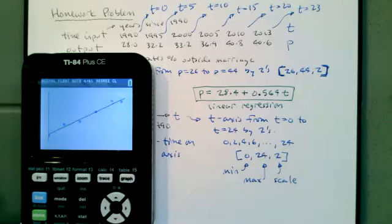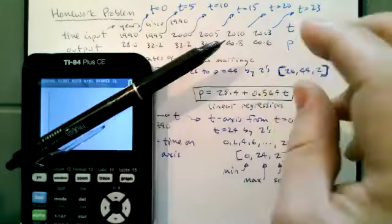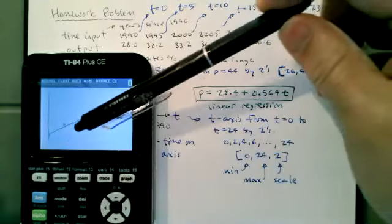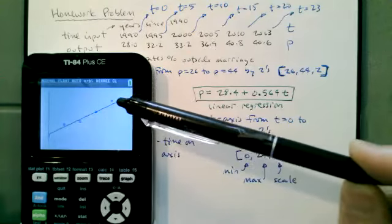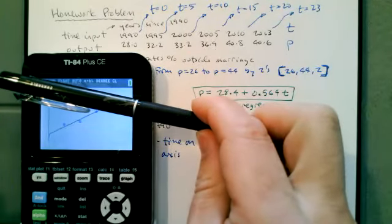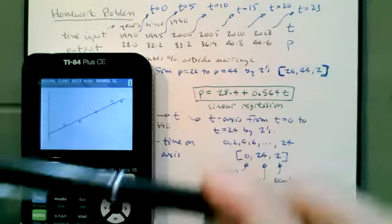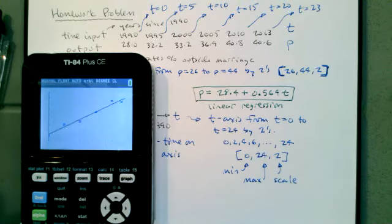When we do a linear regression, we're taking all the points, all six points into account and putting them together to try to find a line that best fits the data. There are rules for what qualifies as the line that fits the best. It involves all six points and not just any two of the points. If I put in the graph 28.4 plus 0.564 times x, we see that this is a pretty good description. It's the best overall description. It looks like it hits one point exactly. What we want to do is come up with a system that will take all the data into account and draw a line that fits the best.